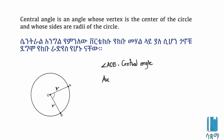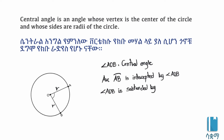Arc AB is intercepted by the central angle AOB. At the same time, angle AOB is subtended by the arc AB. So the terms are: subtended, intercepted.